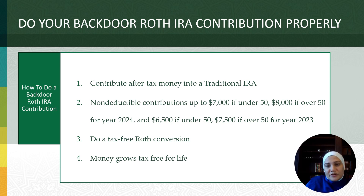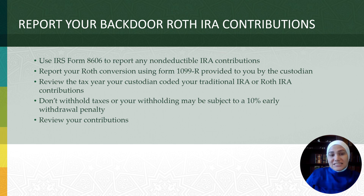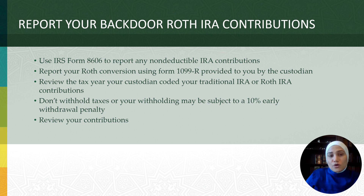Where some taxpayers get in trouble is failing to properly report their non-deductible IRA contributions. These contributions must be reported on IRS Form 8606. The custodian does not report this contribution on any form — just like with QCDs, you must inform your accountant about your non-deductible IRA contribution. Form 8606 helps track your cost basis and ensures you do not pay additional taxes on your non-deductible contribution when converting the balance to your Roth IRA.